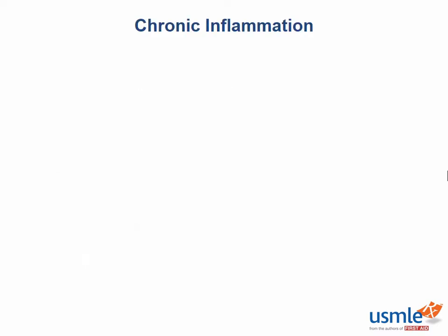So what are the stimuli for chronic inflammation? Like in acute inflammation, there's a myriad of different stimuli that can cause it, but the most common are persistent infection, autoimmune diseases, and foreign material. So the key cells — which cells?